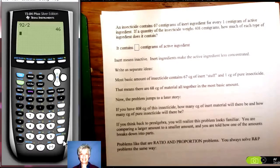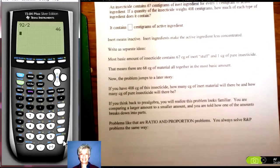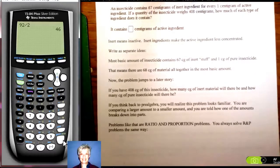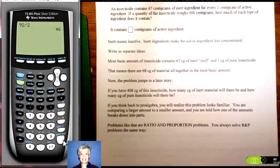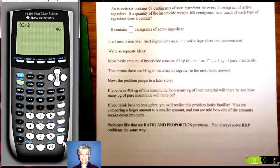Okay, here's a different kind of story problem. It's a problem that you saw in pre-algebra so you may not even remember it. We're going to go over it again. An insecticide contains 67 centigrams of inert ingredient. Inert means it doesn't do anything. It's just there to take up space.